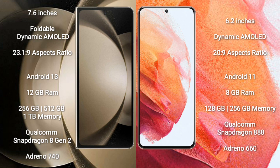The Samsung Galaxy Z Fold 5 comes with 12GB RAM and 256GB, 512GB, or 1TB internal storage, a Qualcomm Snapdragon 8 Gen 2 processor, and GPU Adreno 740. The Samsung Galaxy S21 comes with 8GB RAM and 128GB or 256GB internal storage, a Qualcomm Snapdragon 888 processor, and GPU Adreno 660.